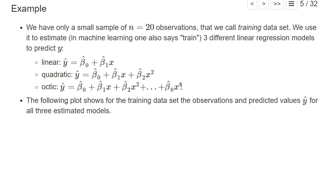We know that the true data generating process was this octic model. I will show you in the following plot how the three models fit the training data set. But first, make a guess which of the three models fits the training data set best in the sense that the sum of squared residuals is the smallest.